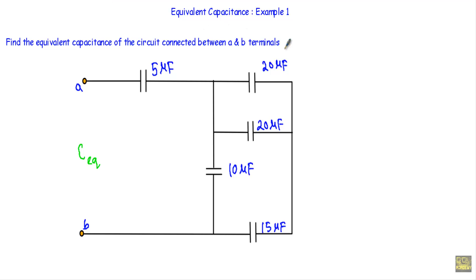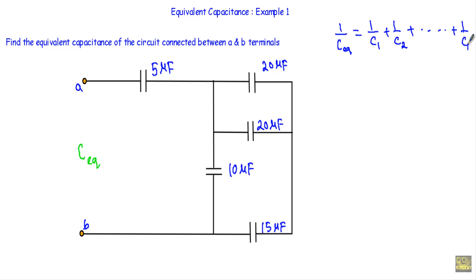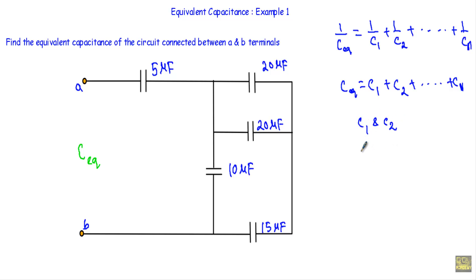Before going to the simplification, let me talk about series and parallel capacitors. When we have several capacitors connected in series, we calculate the equivalent capacitance by taking the reciprocal: 1/C_eq equals the sum of the reciprocals of the individual capacitances. When connected in parallel, we simply take the sum of the individual capacitances. For the special case of two capacitors C1 and C2 in series, C_eq equals C1 times C2 divided by C1 plus C2.